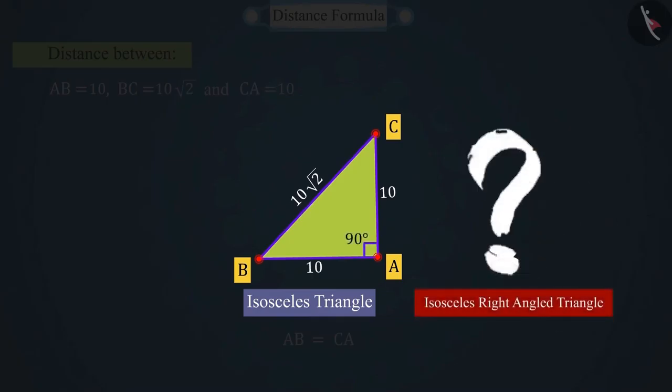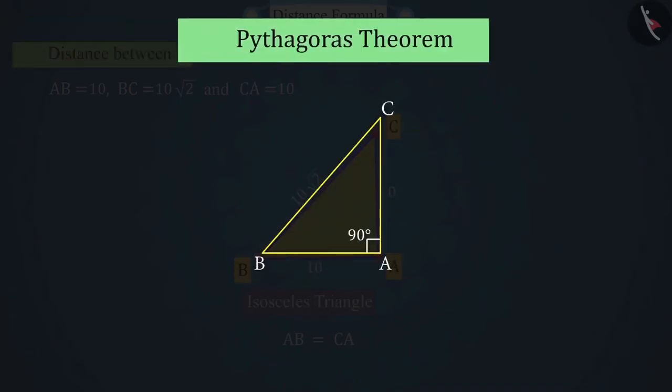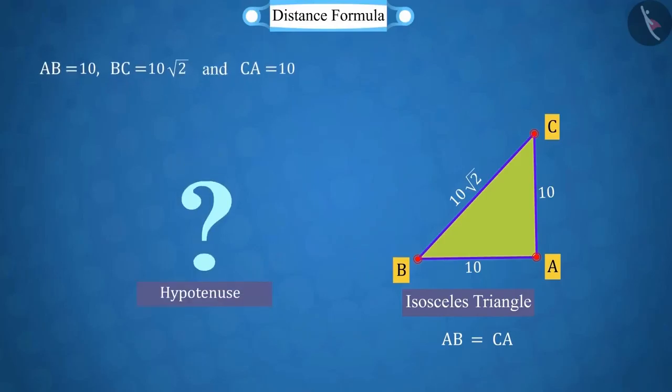Can you tell how we can check if it is an isosceles right-angled triangle? Good. For this, we will use the Pythagoras theorem. First of all, can you tell from which of these three sides AB, BC, CA will be the hypotenuse?